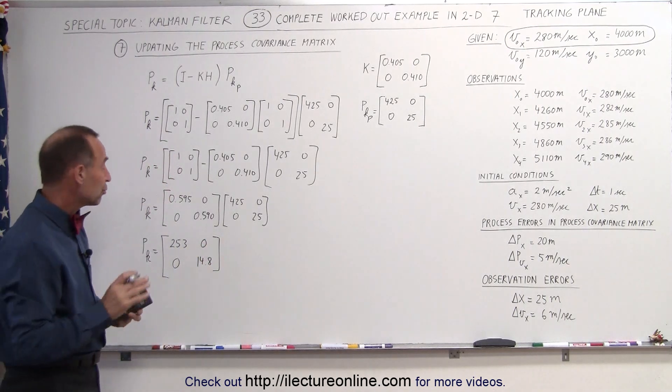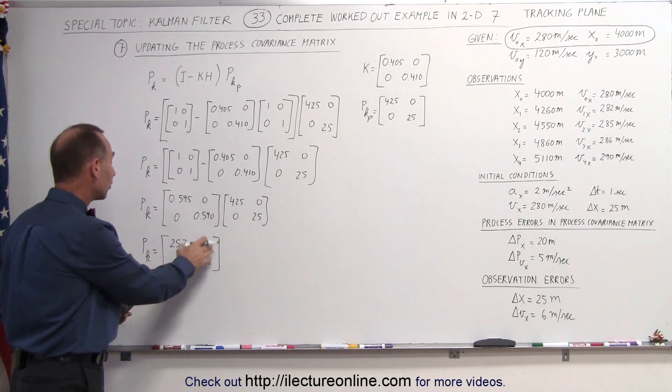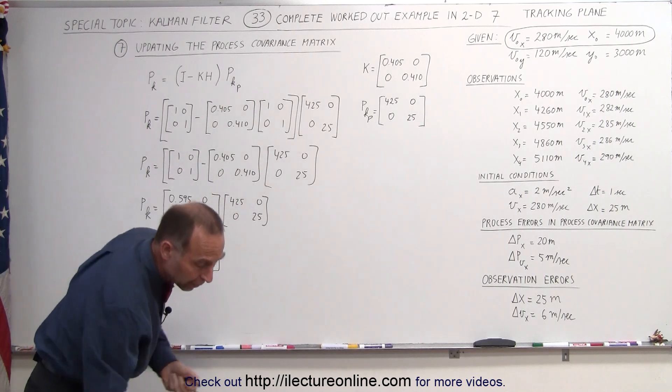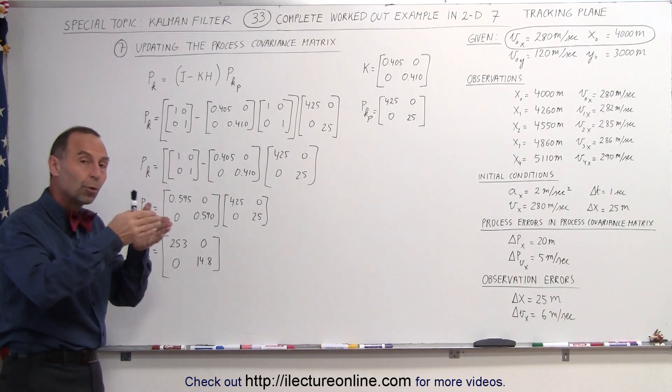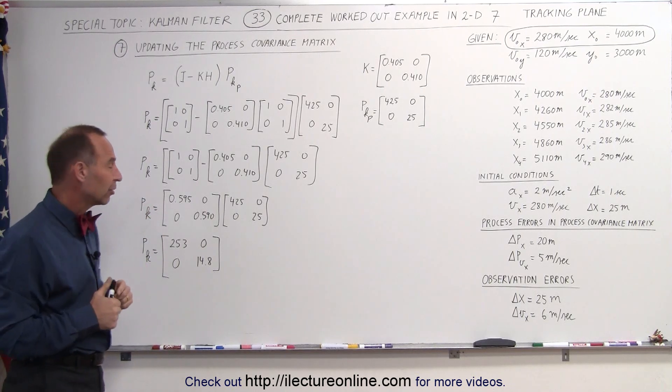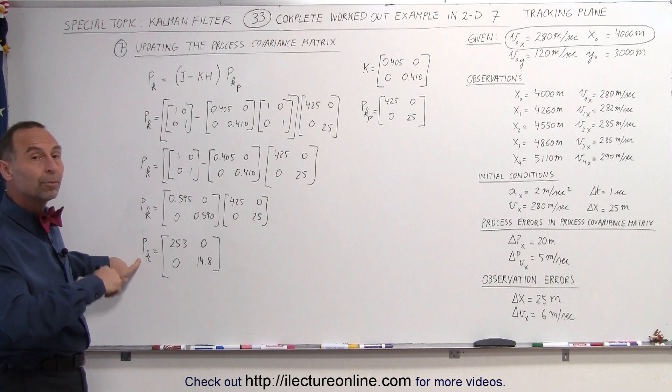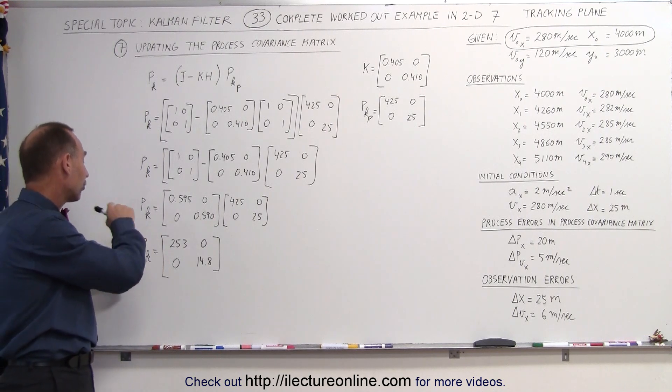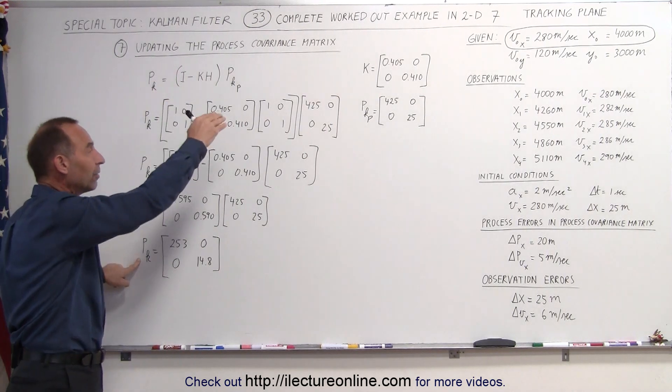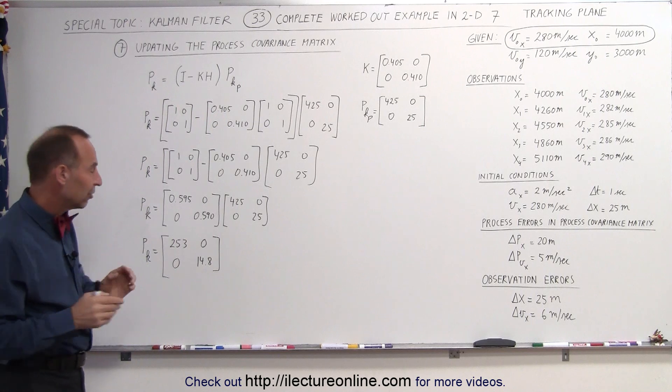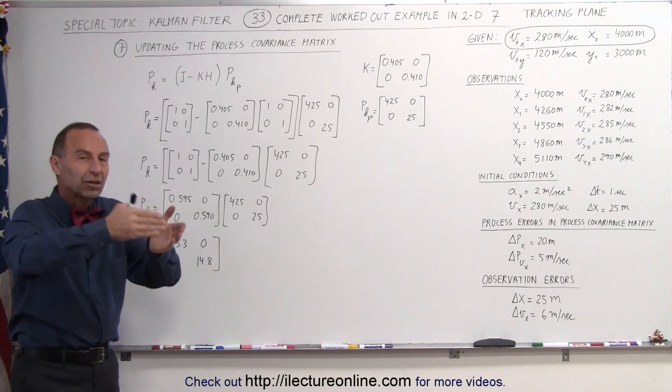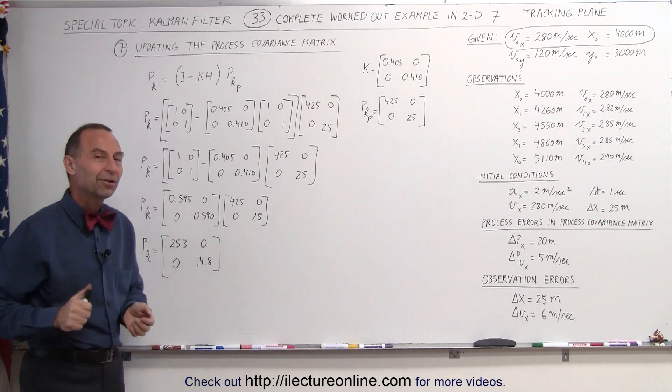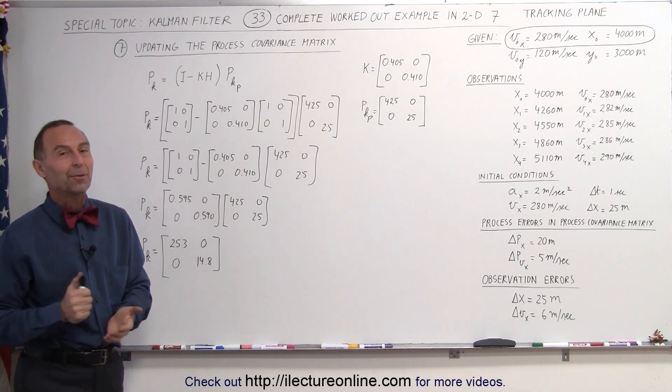There's our new process covariance matrix. Notice that the numbers are smaller than they were before, which means this allows us, using the Kalman filter, to zero in to the more predictable state of where the airplane is going to be. This is now going to become the process covariance matrix in the next go around, and so let's go ahead and see now how we feed this quantity in the latest state that we got into the next process that will be on our next video. And that's how it's done.